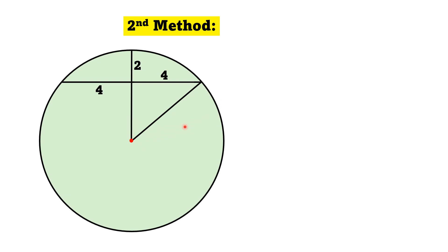If R is the radius of this circle, then this whole length is the radius, and this length will be R minus 2. This pink shaded region is a right triangle with hypotenuse as R and legs as 4 and R minus 2.